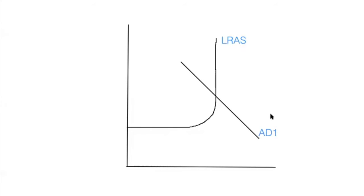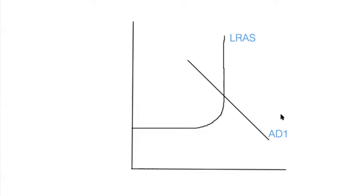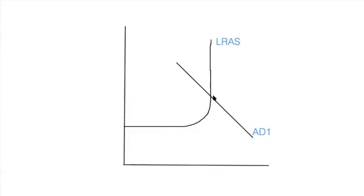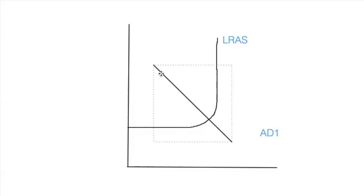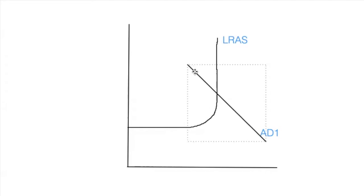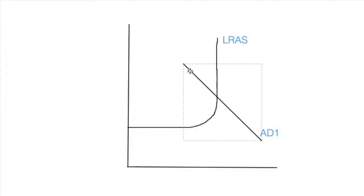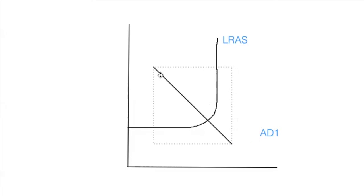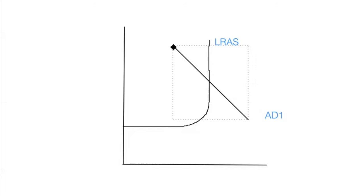A tight monetary policy is going to tighten up the amount of money being injected into the economy, and it might even pull some of that money out. If they tighten up the money enough, it's going to cause the aggregate demand curve to move left. Loose monetary policy would cause it to move right, but tight monetary policy causes it to move left.